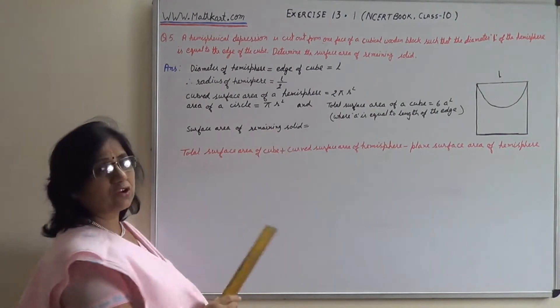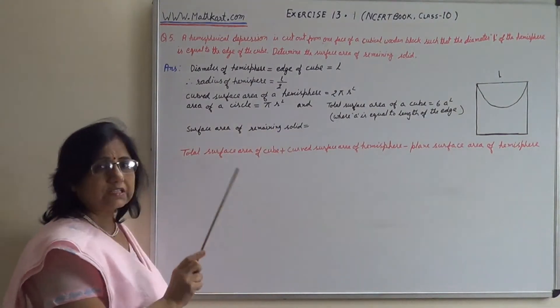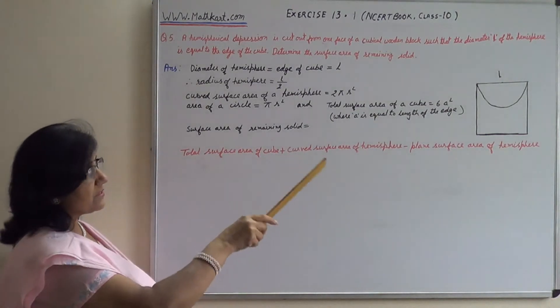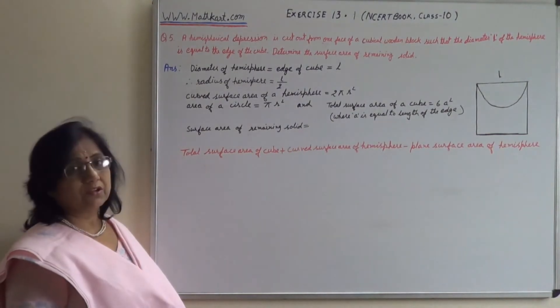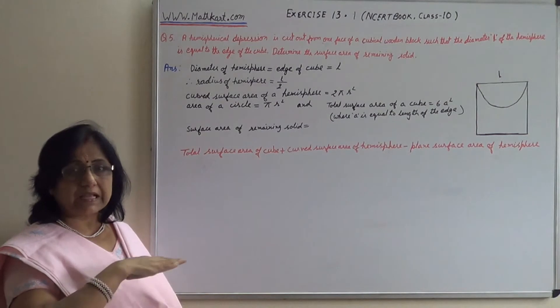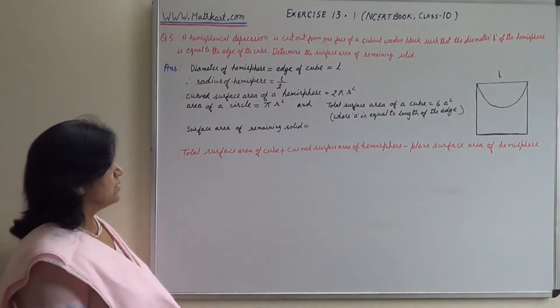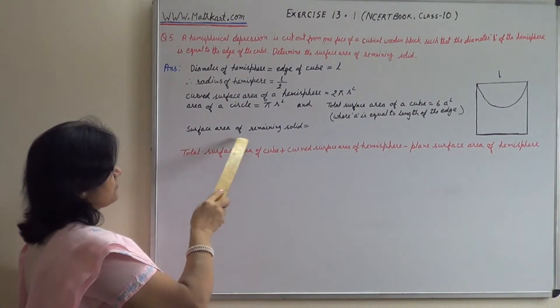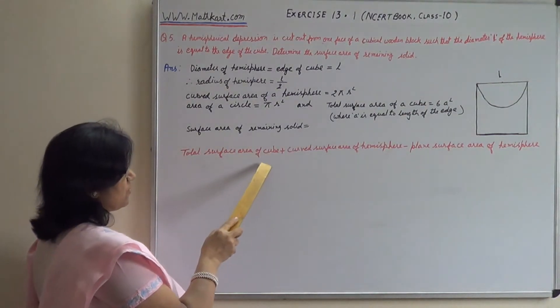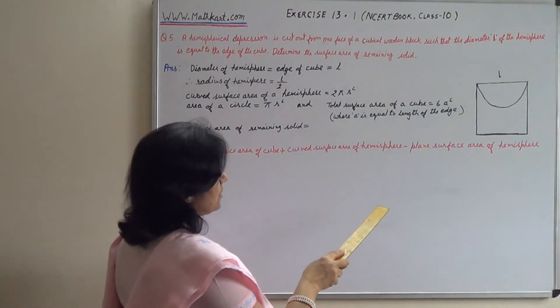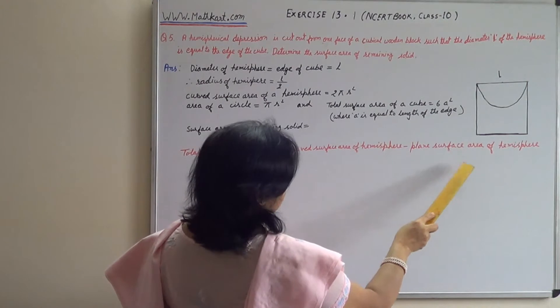Surface area of remaining solid? Total surface area of cube plus curved surface area of hemisphere minus plane surface area of hemisphere, which will not be on top. I've written here: surface area of remaining solid equals total surface area of cube plus curved surface area of hemisphere minus plane surface area of hemisphere.